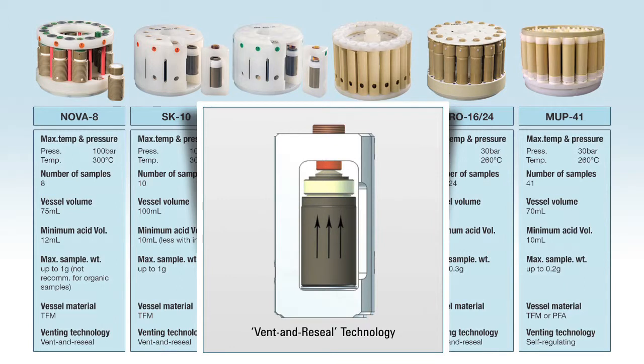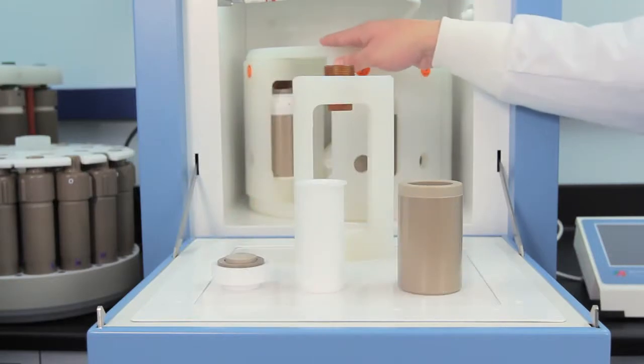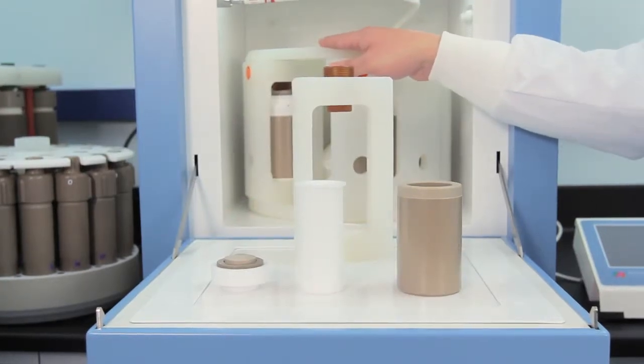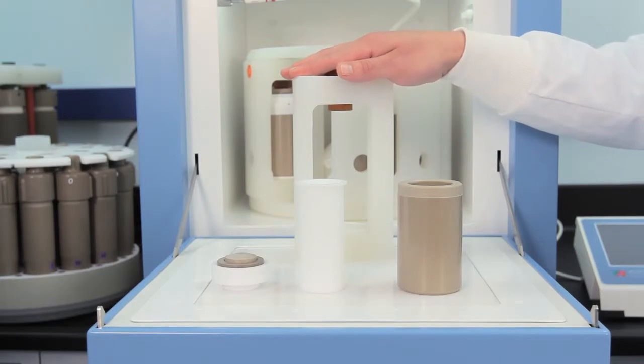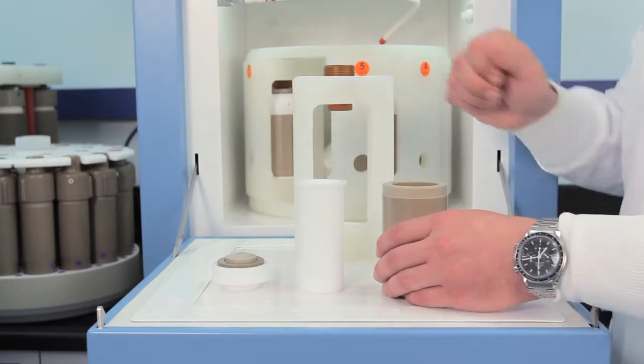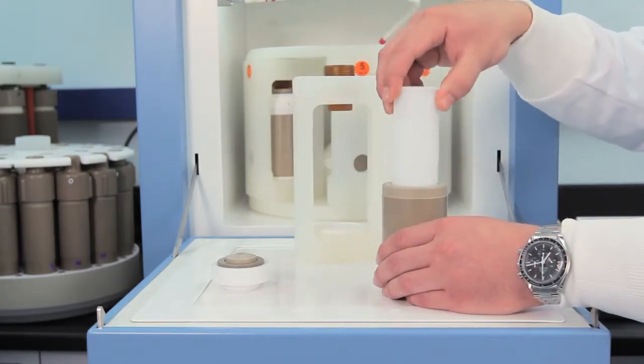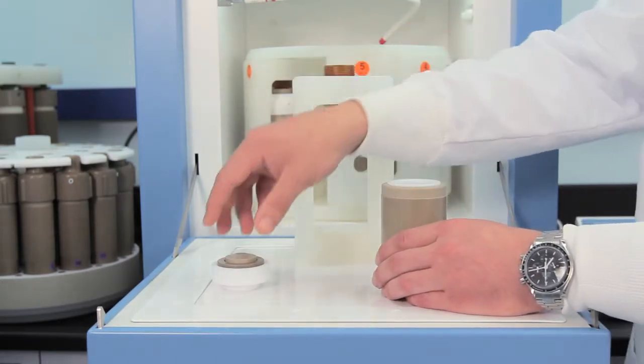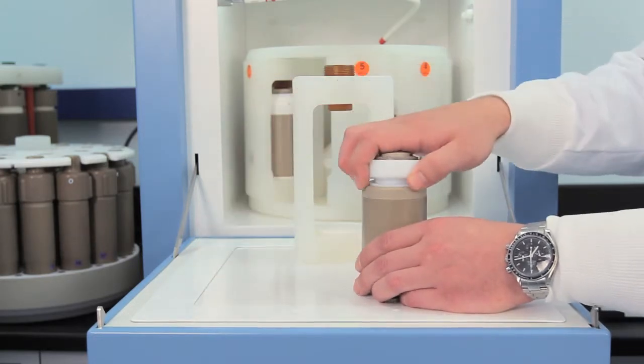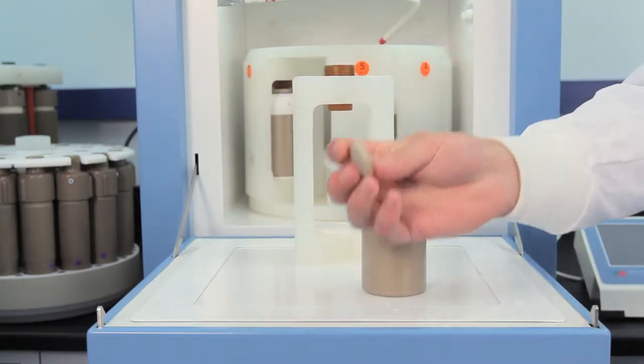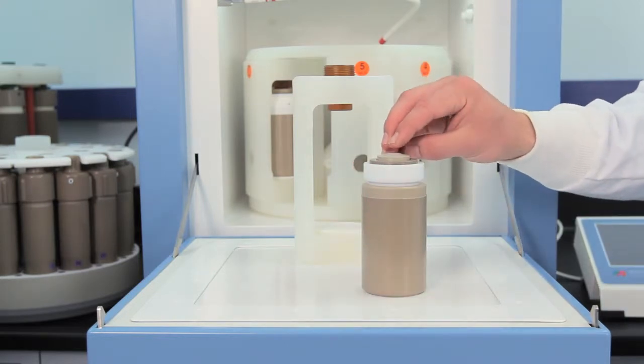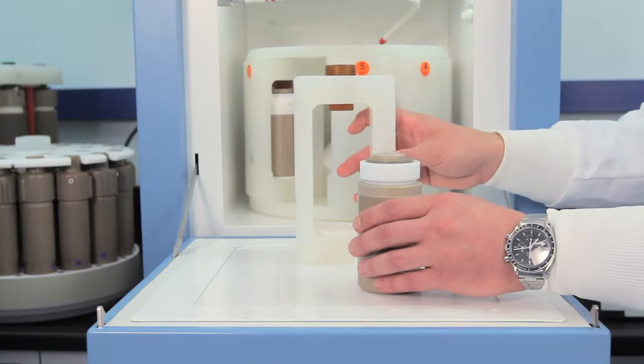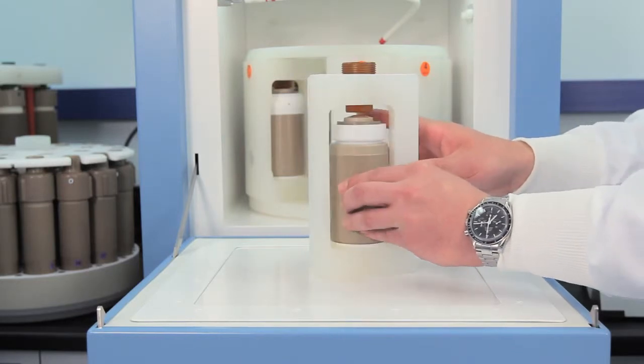This is the SK-10 high pressure rotor with 10 positions. It is a segmented rotor which means vessels can be loaded into the microwave individually if preferred. The vessel is capable of 100 bar of pressure and features Milestone's vent and reseal technology. Should excess pressure occur, this dome-shaped spring will flex allowing the cap to open slightly and gently release excess pressure. The cap then reseals and the run continues without loss of sample.